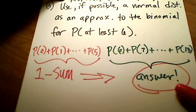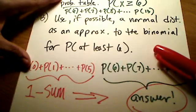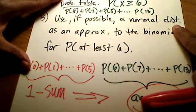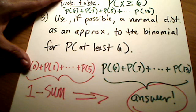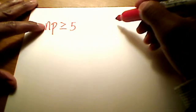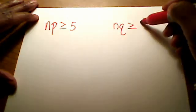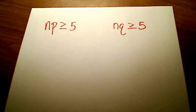The interesting part of this example is part B: use a normal distribution, if possible, to approximate the binomial for at least 6. First, I have to check that both np and nq are greater than or equal to 5. My n is 13, probability of success is 0.4, so 13 times 0.4 equals 5.2 — and that is greater than or equal to 5. That one checks out.